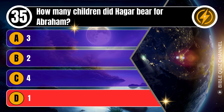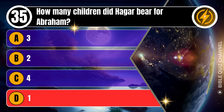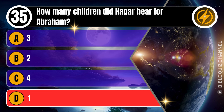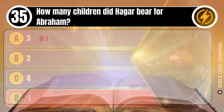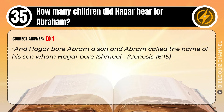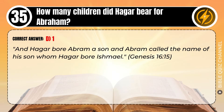Correct answer: D. 1. Explaining the Bible — And Hagar bore Abram a son, and Abram called the name of his son, whom Hagar bore, Ishmael. Genesis, chapter 16, verse 15.